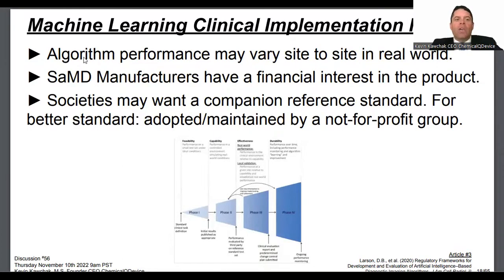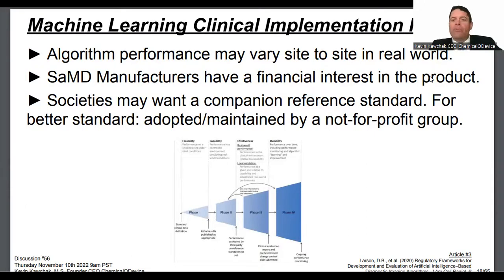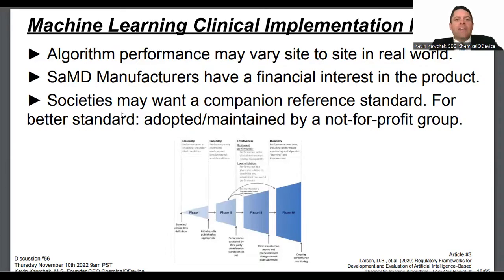Some of those recommendations may be hard to implement; maybe both FDA and companies agree that certain asks aren't practical. Algorithm performance may vary site to site — two different algorithms in two different places with the same inputs can operate differently. Any manufacturer has a financial interest in the product, which shapes how eventual approvals happen. Societies may want a companion reference standard maintained by a not-for-profit group.